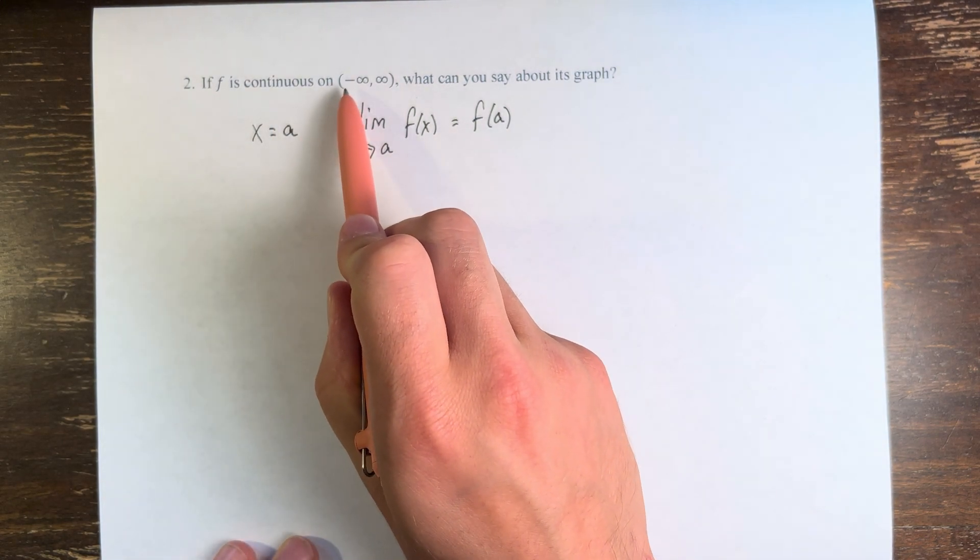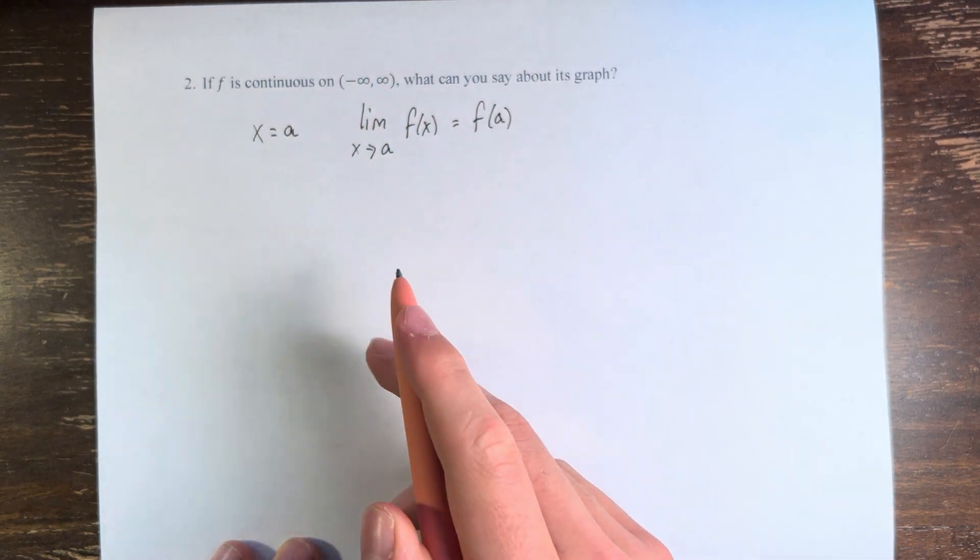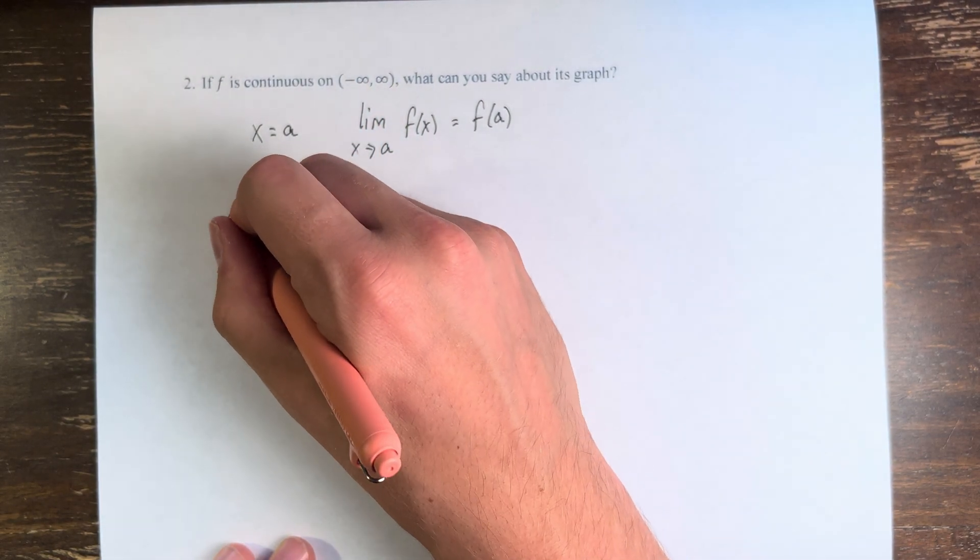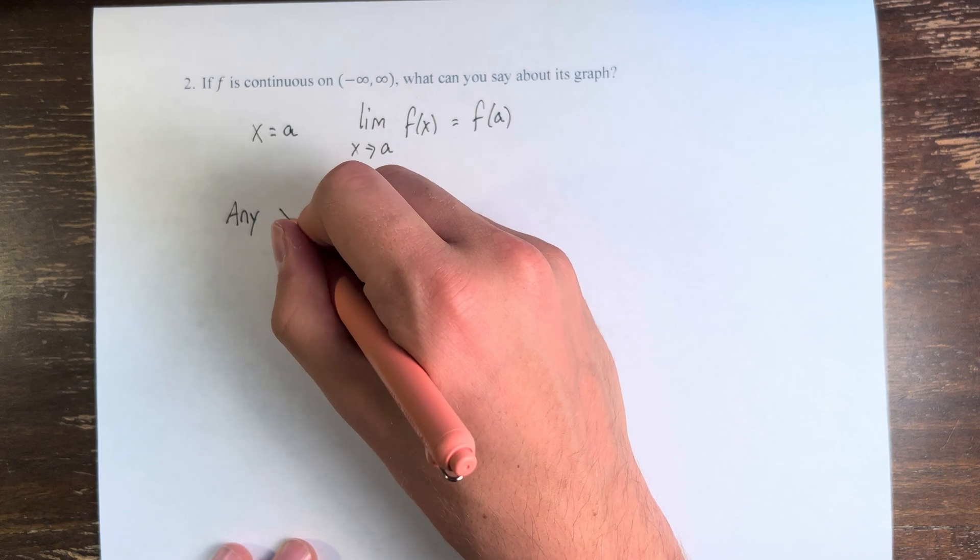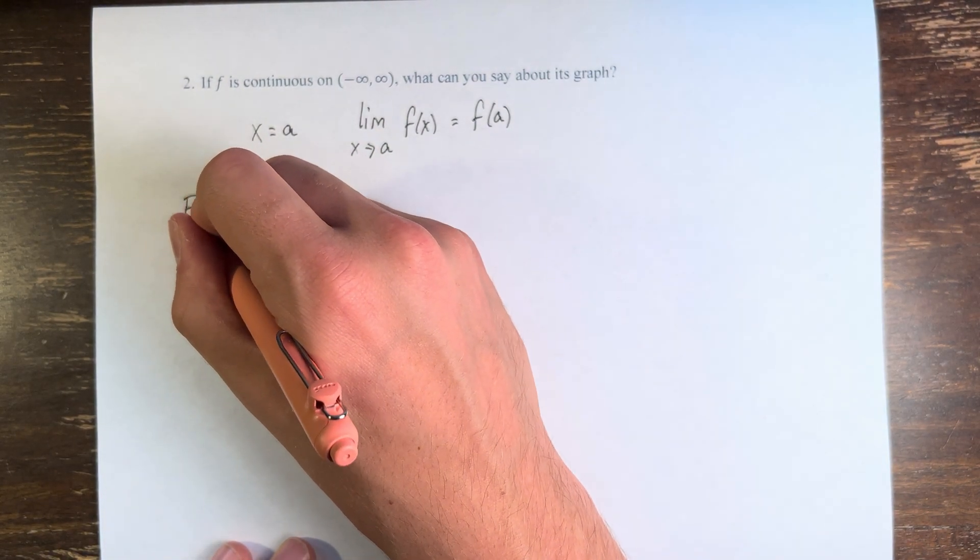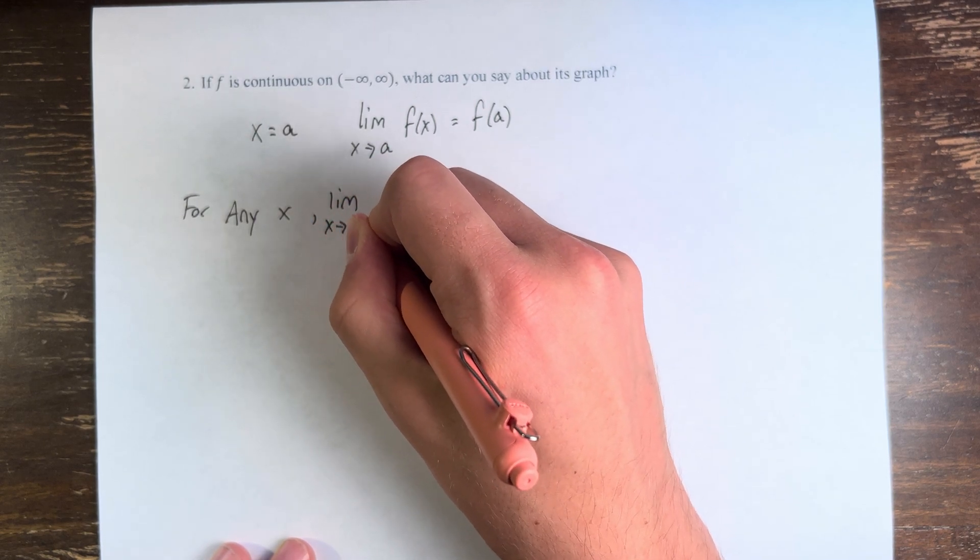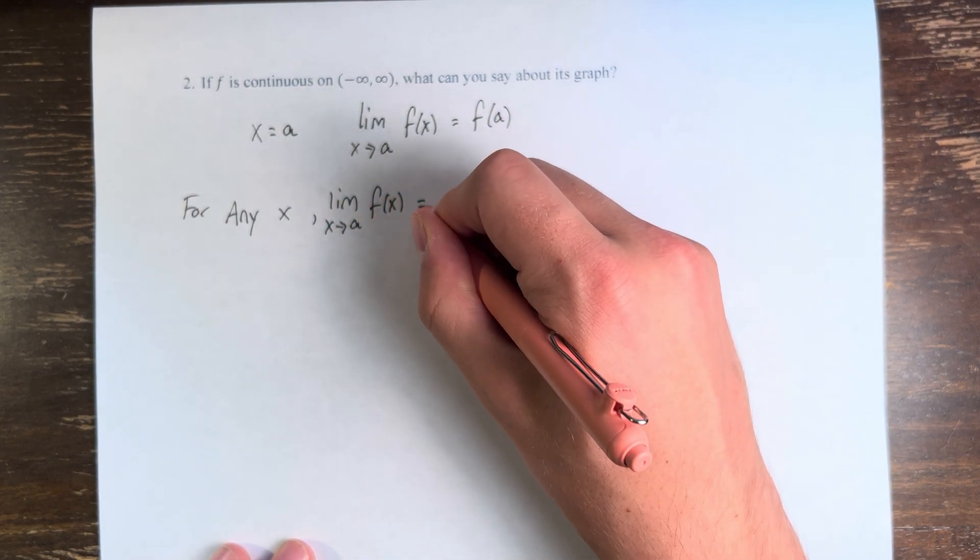If the function is continuous on the interval from negative infinity to infinity, this is all real numbers, this means that for any x in the real numbers, the limit as x approaches a of f(x) equals f(a).